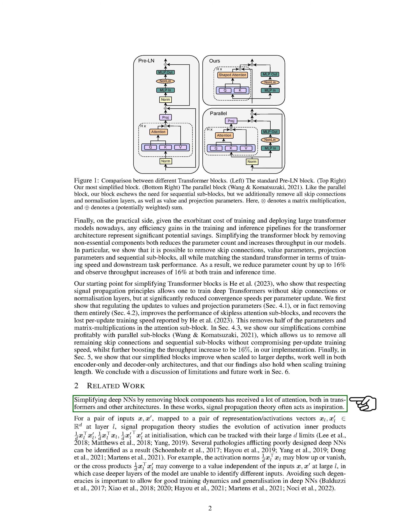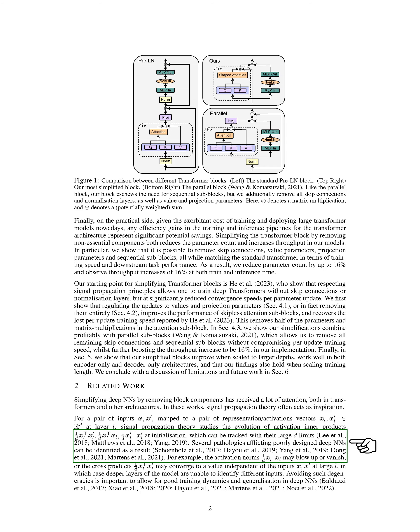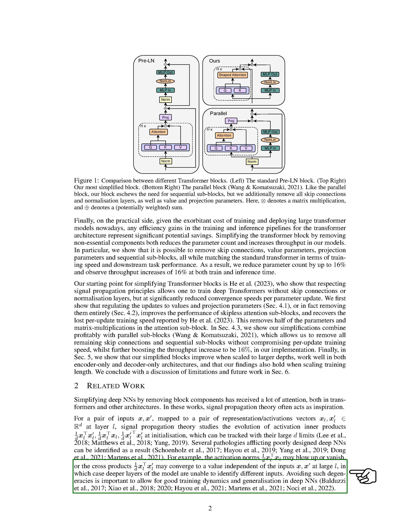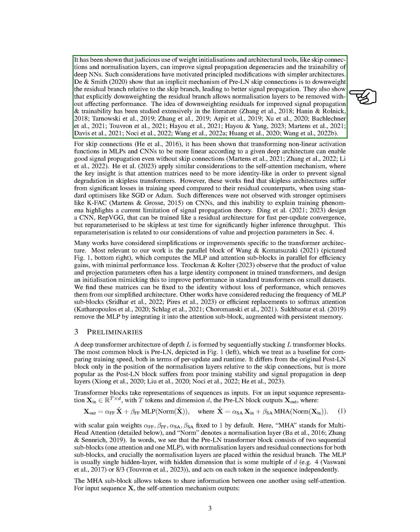In these works, signal propagation theory often acts as inspiration. For a pair of inputs, signal propagation theory studies the evolution of activation inner products at initialization, which can be tracked with their large limits. Several pathologies afflicting poorly designed deep neural networks can be identified as a result. For example, the activation norms may blow up or vanish, or the cross-products may converge to a value independent of the inputs at large, in which case deeper layers are unable to identify different inputs. Avoiding such degeneracies is important to allow for good training dynamics and generalization.